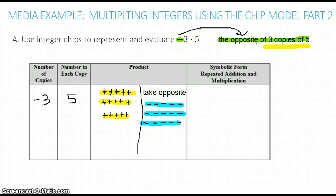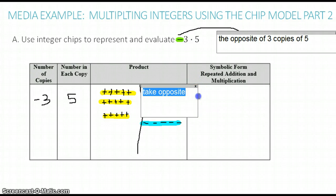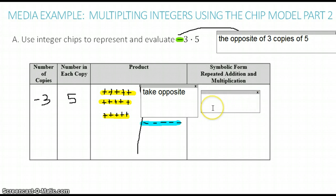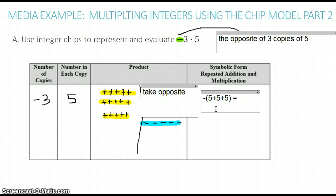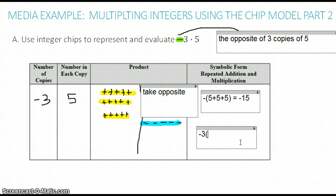So now let's write our symbolic form and our results. We're going to think of this as the opposite of 3 copies of 5 — so adding five three times — and putting the fives in parentheses because we found all of the fives first and then took the opposite. So this would be the opposite of fifteen, or negative fifteen. As multiplication, we would write this as negative 3 times 5 equals negative 15.